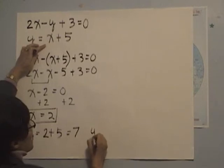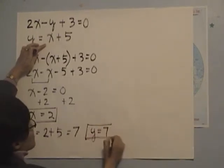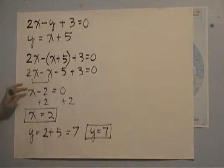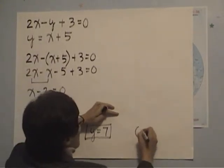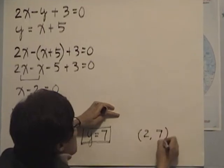So we say, y equals to 7, you can box them just like that. You can leave it there, or you can give me ordered pair, 2 and 7.